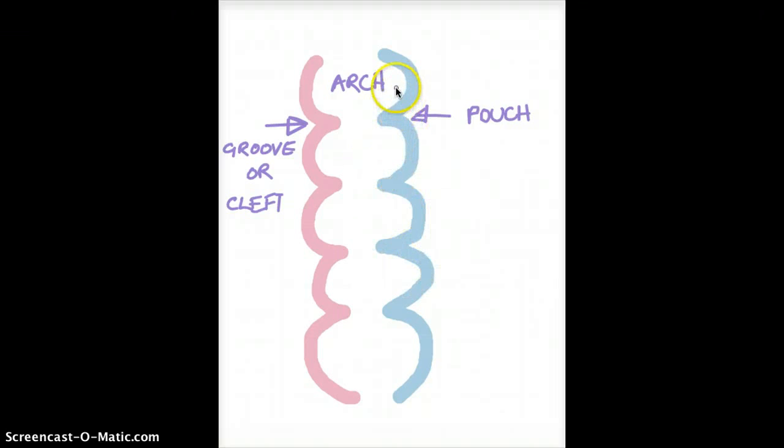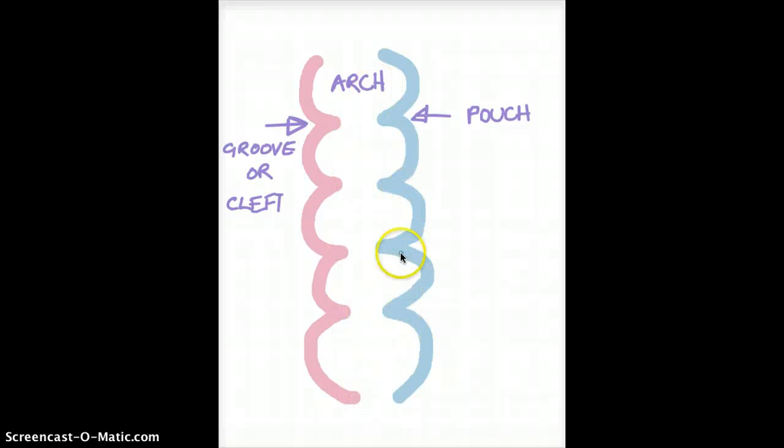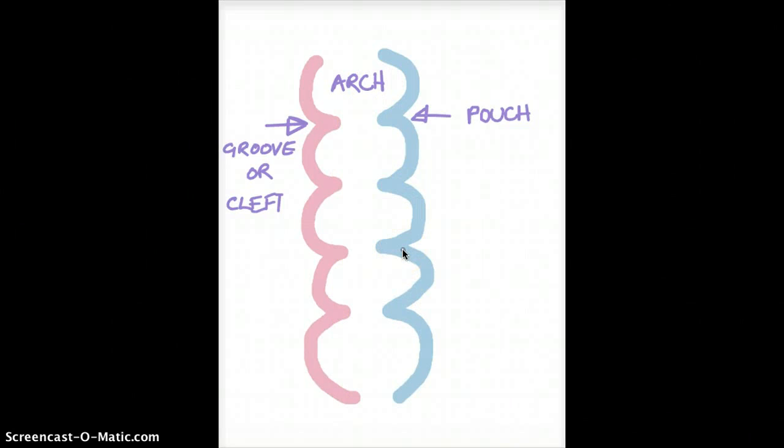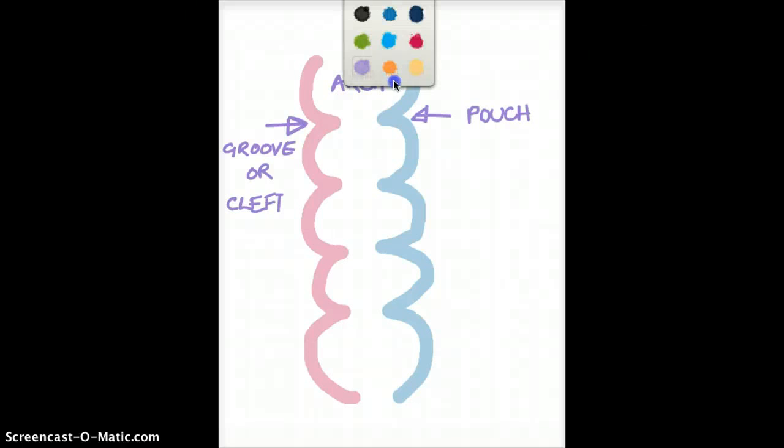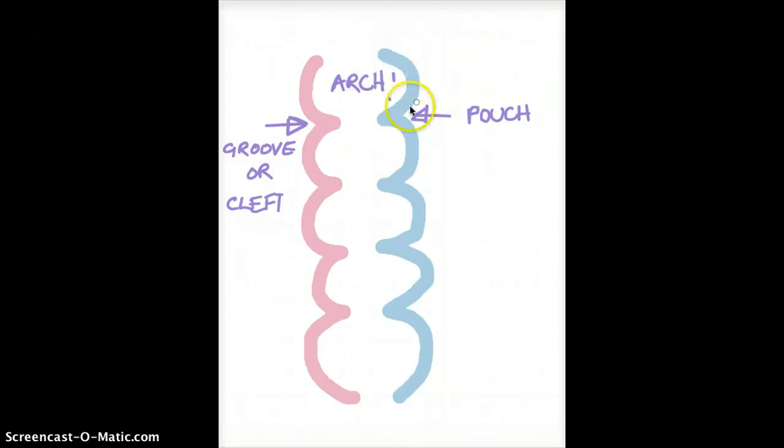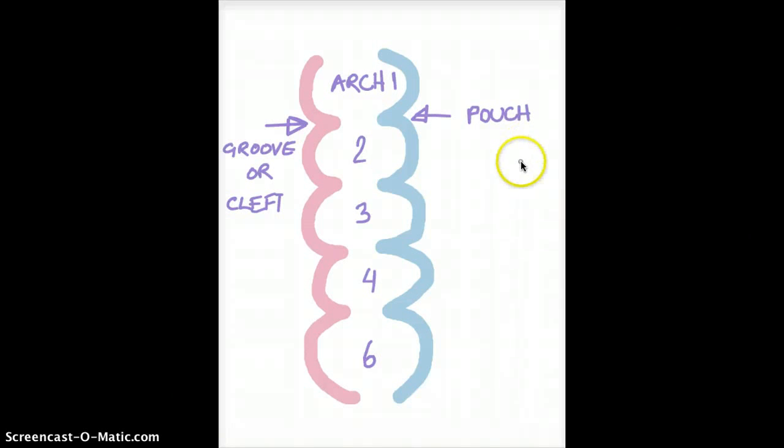Now, we have five arches. Initially we have six arches, but our fifth arch disintegrates, so we end up with five arches. So this is arch one. This is arch two, three, four and six. Like I said, the fifth one is going to disintegrate.